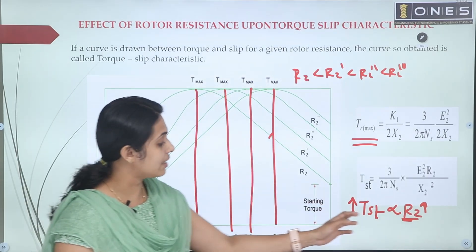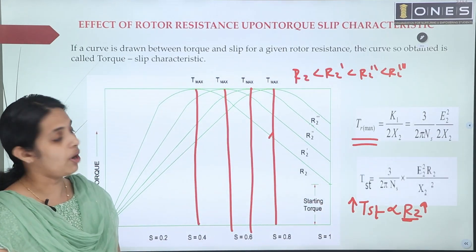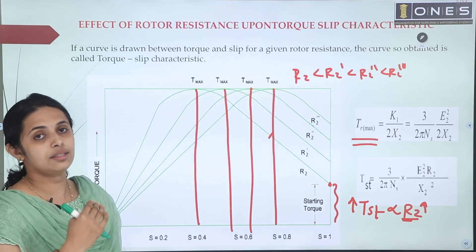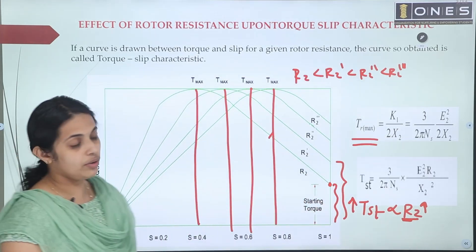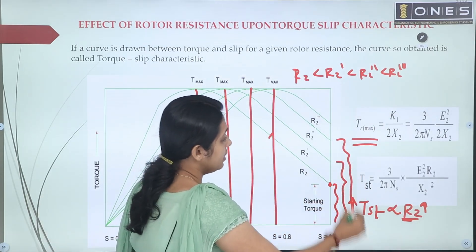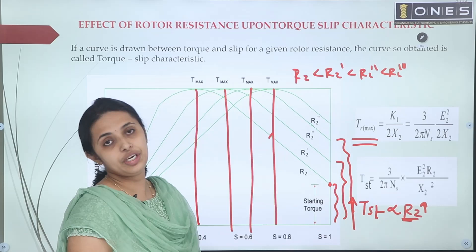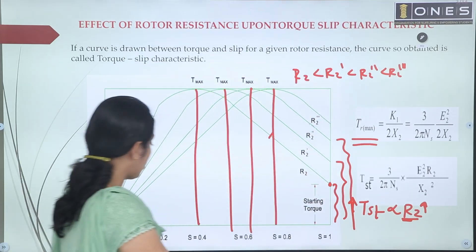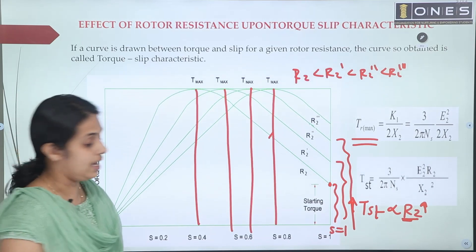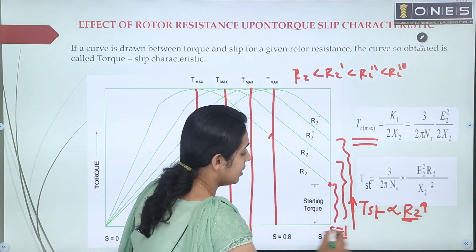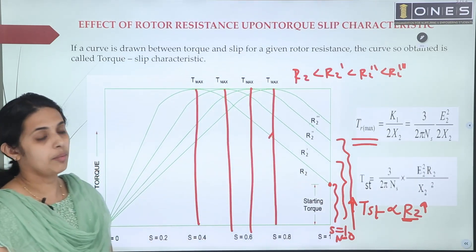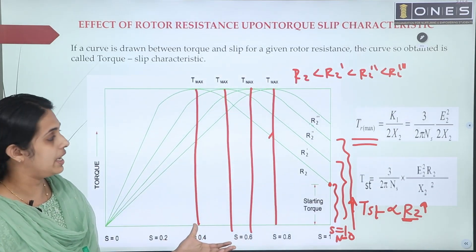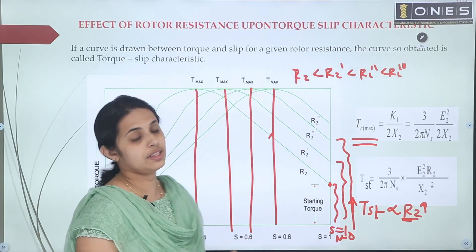The starting torque is directly proportional to R2. When R2 equals X2, maximum starting torque equals maximum torque. If we want the slip equal to 1 (standstill), speed is 0, so starting torque varies. The observation: the maximum torque magnitude remains the same, but the starting torque increases with rotor resistance.